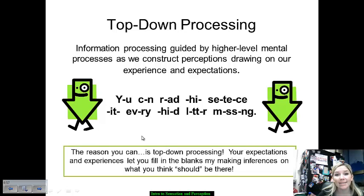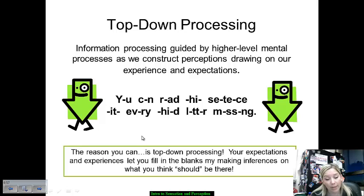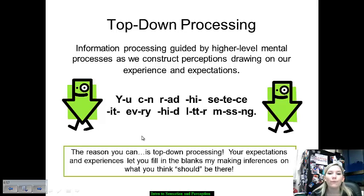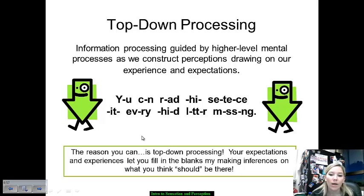You'll notice that it says you can read this sentence with every third letter missing. We have the ability for our brain to fill in gaps for us in order to be able to perceive and to establish higher-level thinking. We can make inferences about what we think the letters should be, and the reasoning behind that is our top-down processing ability.